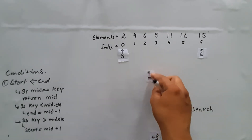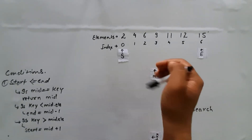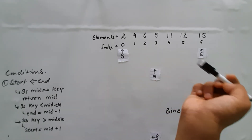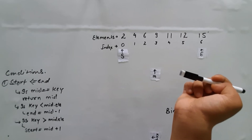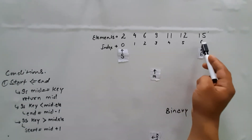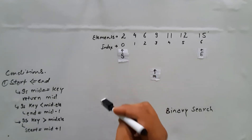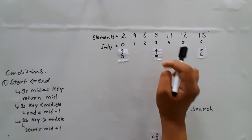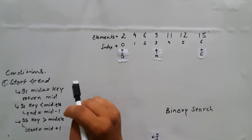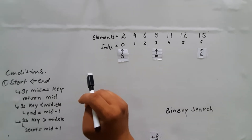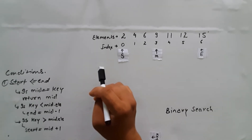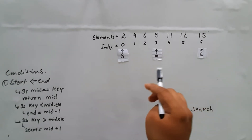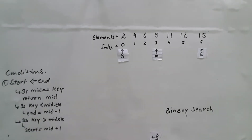Now how do we get the mid? We add the starting index and the end index and divide by 2. In this case, we have 6 plus 0, which is 6, divided by 2, we get 3. So mid is going to point towards index 3. We keep on dividing our searching space by half until the mid becomes the element we are looking for. That's it.